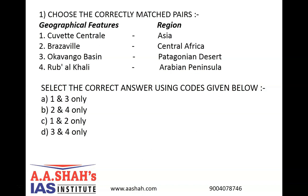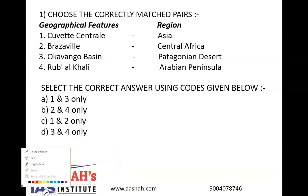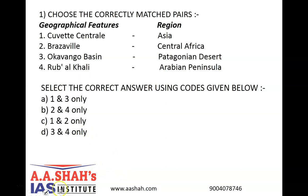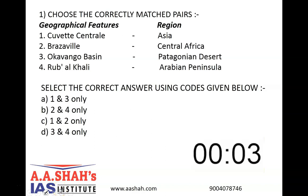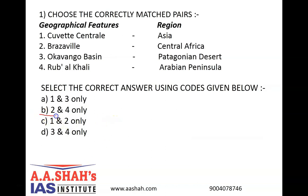Select the correct answer using the codes given below. A: 1 and 3 only. B: 2 and 4 only. C: 1 and 2 only. D: 3 and 4 only. The correct answer is B, 2 and 4 only.